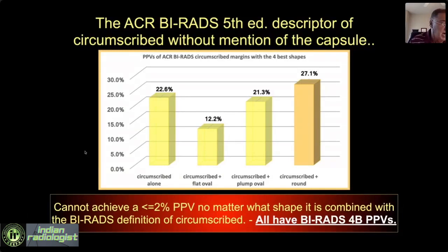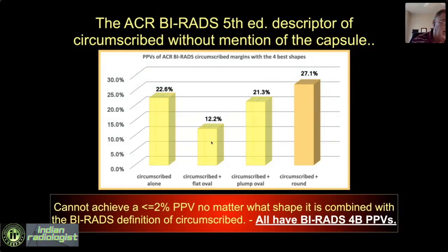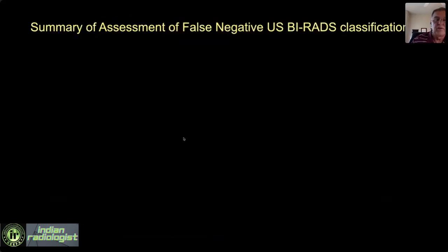Margin alone completely fails: circumscribed alone gives a 22% false negative rate — low-to-mid 4B. Circumscribed plus flat oval: still low 4B, not even reaching 4A. Circumscribed plus plump oval or round plus circumscribed: mid 4B range. Clearly, circumscribed with any combination of shape totally fails to define any population with less than a 2% false negative rate. The ACR definition of a benign margin as circumscribed is woefully inadequate.